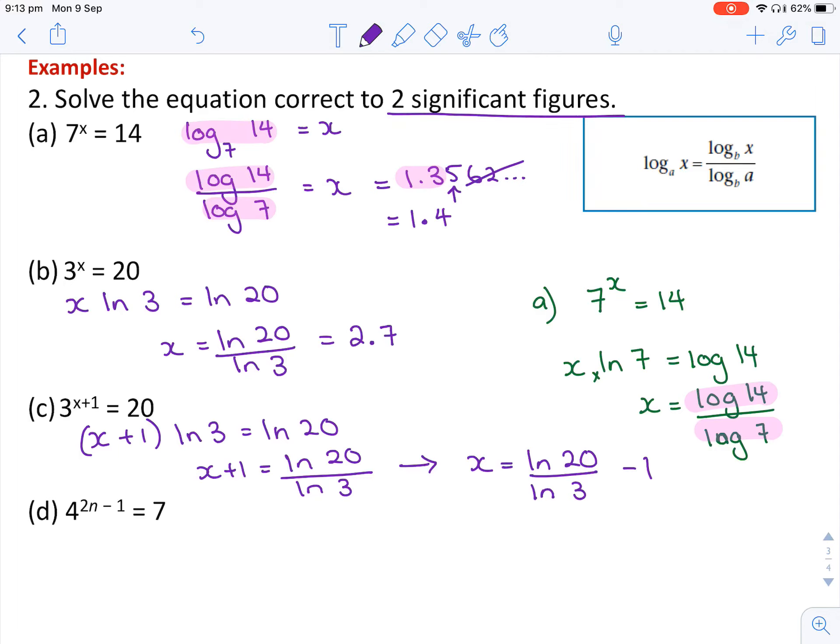Let's have a look at part d. Same thing, logging both sides. I get 2n minus 1 log 4 equals log 7.